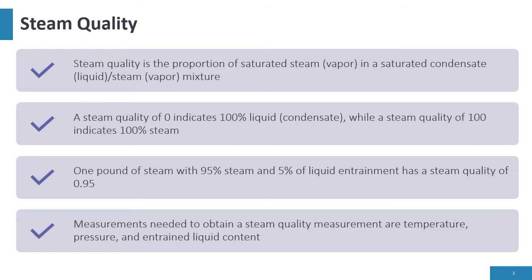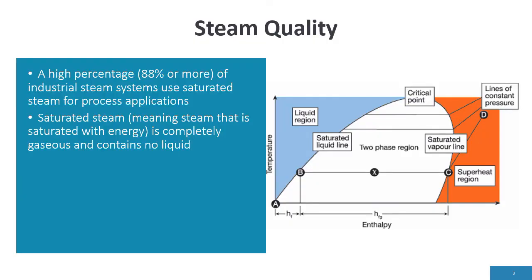One pound of steam with 95% vapor and 5% liquid entrainment has a steam quality of 95%, or 0.95. Measurements needed are temperature, pressure, and entrained liquid content. We'll talk more about testing methods in this presentation. A high percentage — 88% or more — of industrial systems use saturated steam for process applications. Saturated steam means steam that is saturated with energy, completely gaseous, containing no liquid. We have a tendency to think it means saturated with water or condensate — it does not. It is saturated with energy.